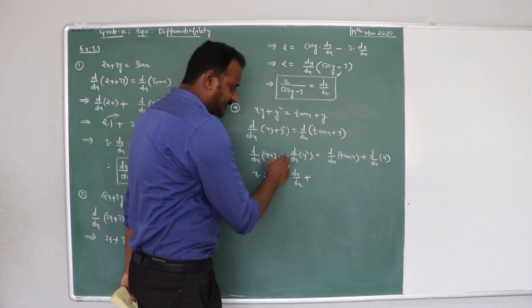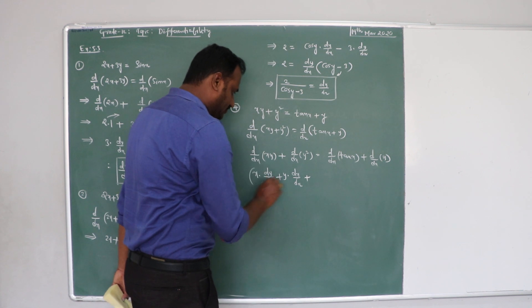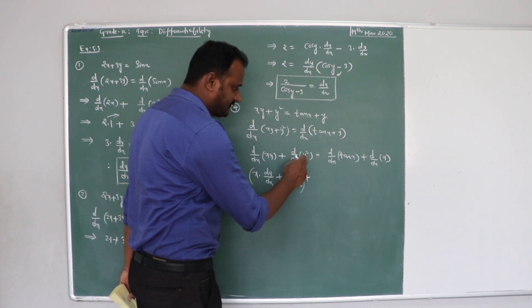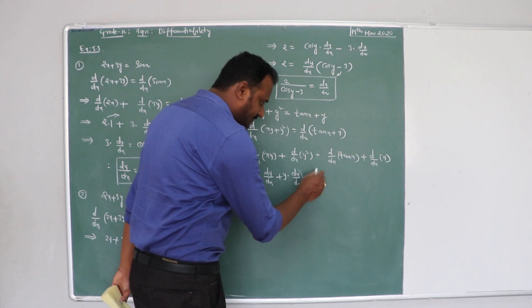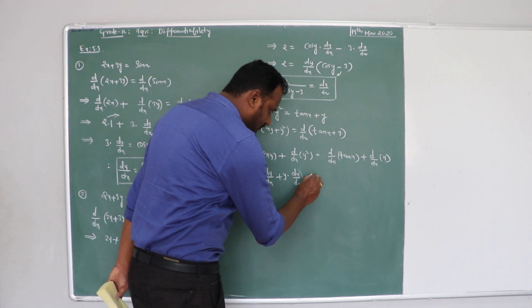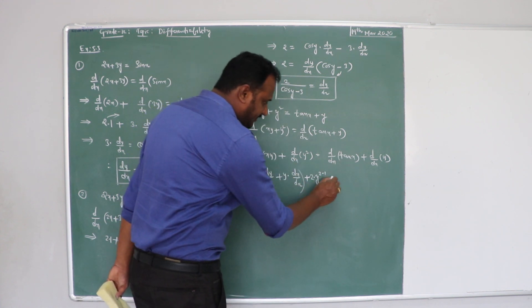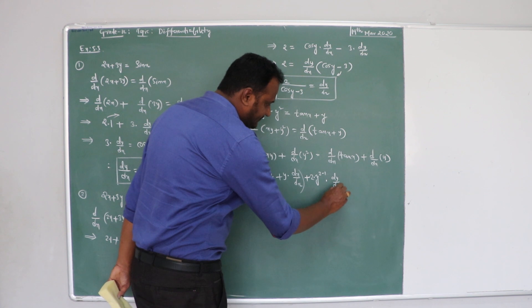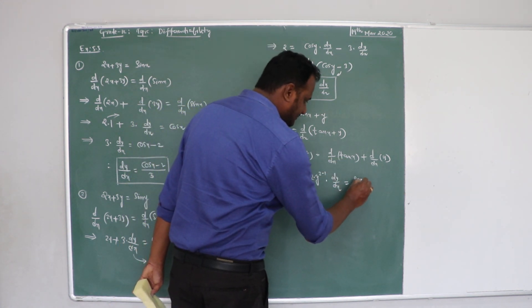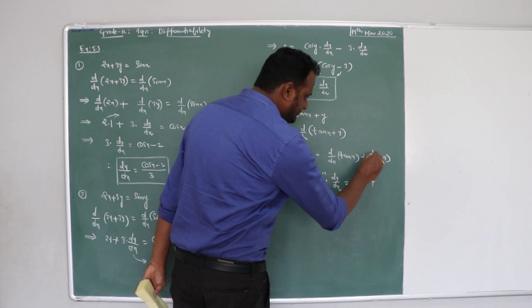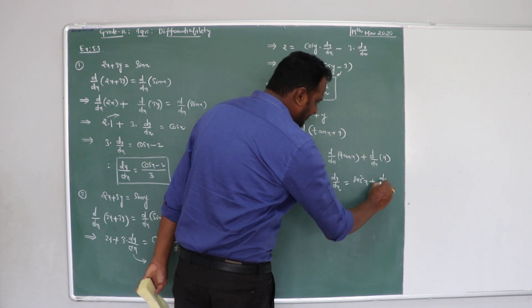Plus d by dx of y squared. So, if you want to observe, d by dx of y squared is in the form of y to the power of n. So, n into y power n minus 1, that is 2 into y power 2 minus 1 into dy by dx. It is equal to d by dx of tan x is secant square x plus d by dx of y is dy by dx.